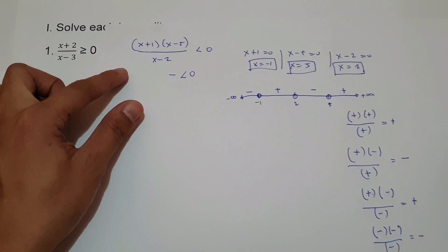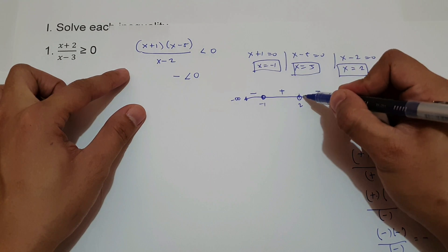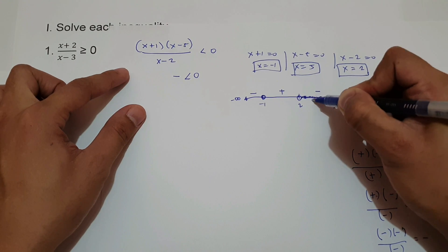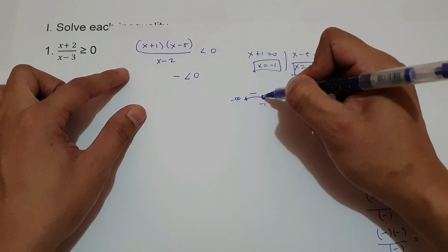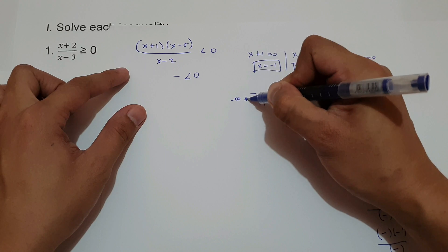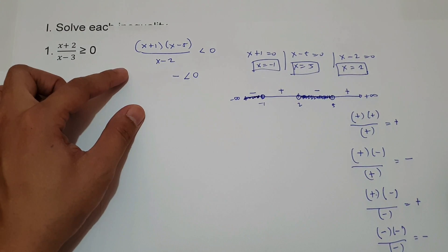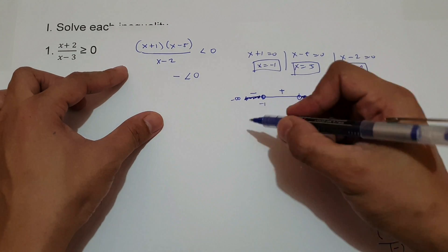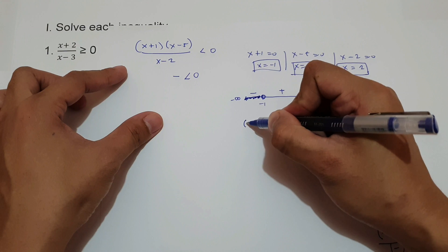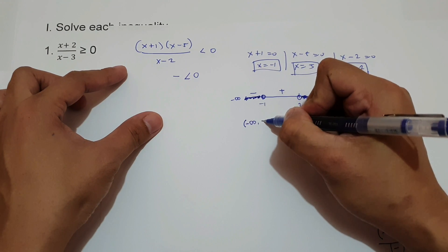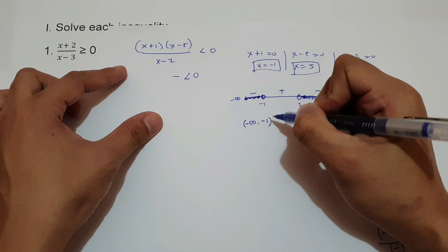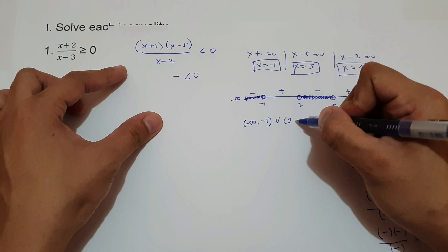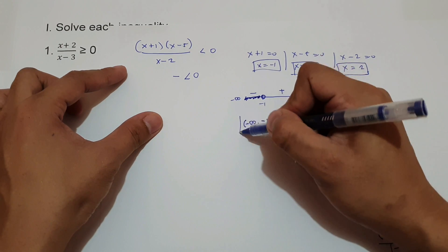The numbers between 2 and 5 are part of the solution, and all numbers less than negative 1 are also part of the solution. In interval notation: open parenthesis negative infinity up to negative 1, close parenthesis, union open parenthesis 2 up to 5, close parenthesis — because of the open circles.